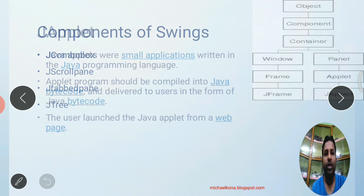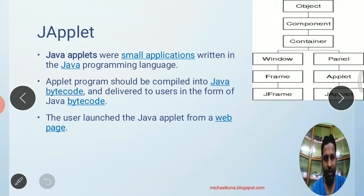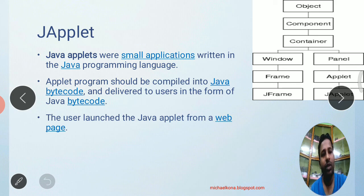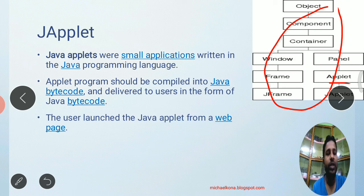Now let us start with the applet. An applet is a small application written in Java. If you want to create an applet, you have to inherit the applet class. There is an applet class in the AWT package. In Swing, we also have another applet — JApplet — which is created by inheriting the existing AWT applet. Here is the class diagram: Applet is from AWT, and JApplet is from Swing.